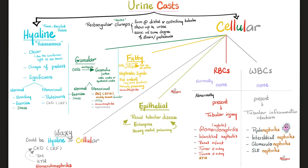Granular casts form when cells die and disintegrate, making granules within white blood cell or epithelial casts. They can be physiological (exercise, stress) or pathological. The key exam buzzword is muddy brown granular casts, which equals acute tubular necrosis. ATN can be toxic (medications, heavy metal poisoning) or hypoxic/ischemic (hypoperfusion of the kidney). UTIs, glomerulonephritis, and nephrosclerosis can also lead to granular cast formation.